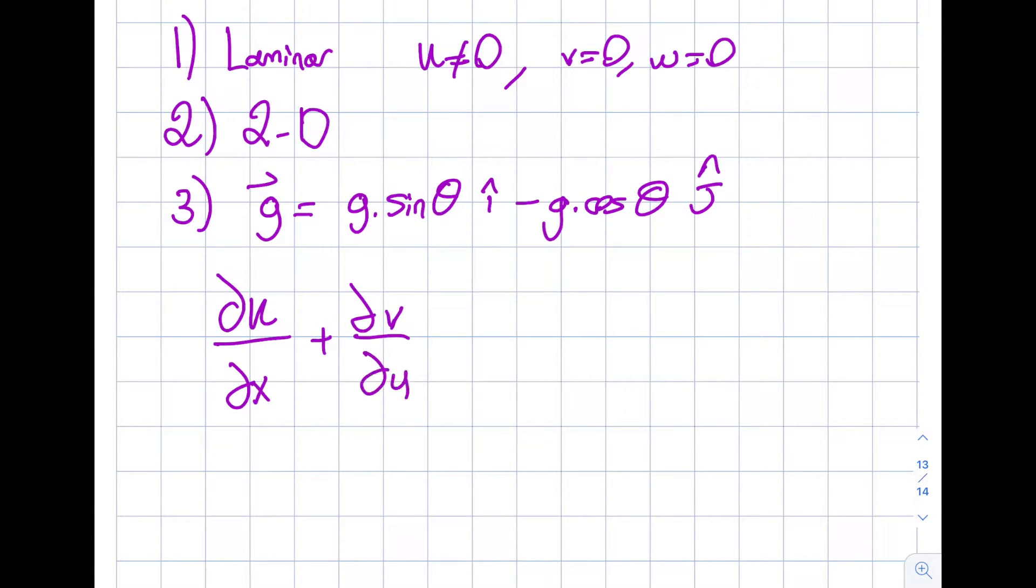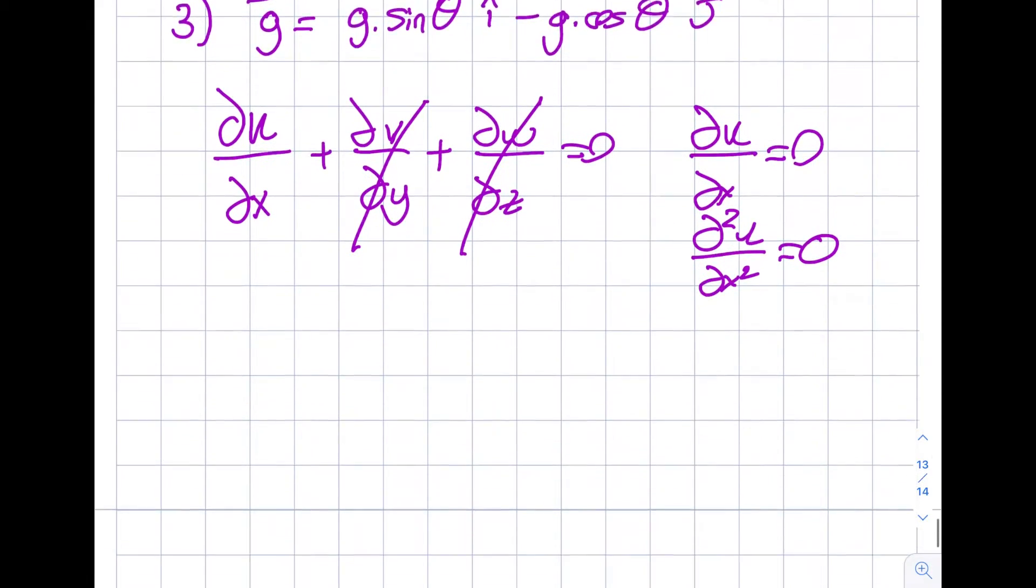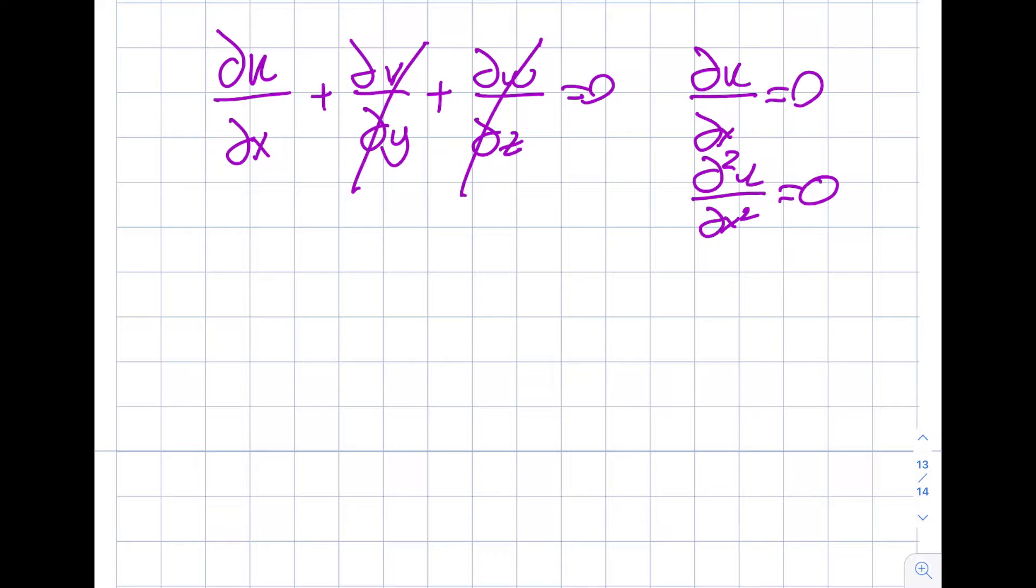Del u del x plus del v del y plus del w del z is equal to 0. You can see from here the second and third terms vanish. So I got myself del u del x is equal to 0. And I will also write myself a note that del square u del x square is equal to 0 as well. We discussed this in the previous segments. I'm taking a shortcut over here.